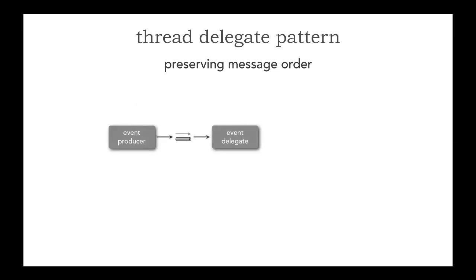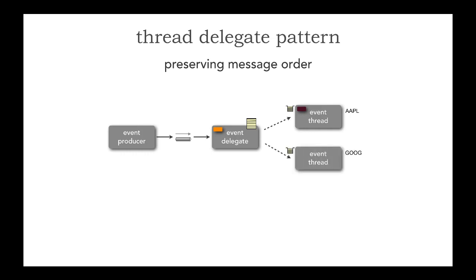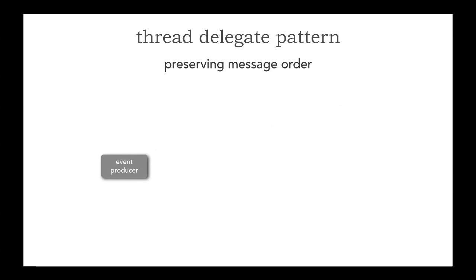When we start thinking about preserving message order, we have the event producer coming to the delegate. What the delegate has in it is something called an allocation map. If you go to my GitHub repo at wmr513 slash reactive, you'll see some code to actually implement this as well as some demos. A message comes in. The allocation map knows who's processing what kind of message. In this case, our context is going to be the symbol. Notice that queue on that thread delegate — if an Apple order comes in, it knows that that event thread is processing Apple. If an order for Google comes in, it sends it to an event thread that happens to be processing Google. This way, all of the messages of that particular context can actually be processed in order.